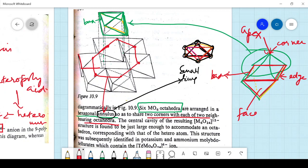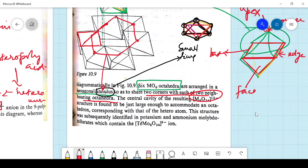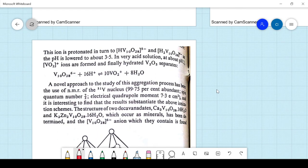So the central cavity results in MO6O24 octahedra structure which is large enough to accommodate an octahedron corresponding with that of the heteroatom. This structure subsequently identified in potassium ammonium molybdate containing this one. So here you can see that MO6O24 is an octahedra, but you are adding tellurium and then you are just calling it as a hetero acid. So this is protonated to turn into H.